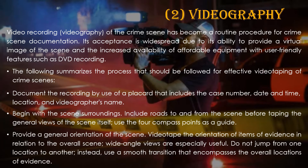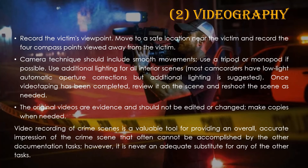Use the four compass points as a guide to provide a general orientation of the scene. Videotape the orientation of items of evidence in relation to the overall scene. Wide-angle views are especially useful. Do not jump from one location to another; instead use a smooth transition that encompasses the overall location of the evidence. Record the victim's viewpoint — this is the most important. Move to a safe location near the victim and record the four compass points viewed away from the victim.